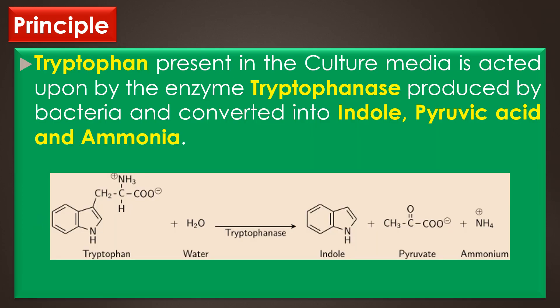Tryptophan is an essential amino acid that can undergo deamination and hydrolysis by bacteria that express the tryptophanase enzyme. The amino acid tryptophan present in the culture media is acted upon by the enzyme tryptophanase produced by the bacteria and converted into Indole, pyruvic acid, and ammonia.